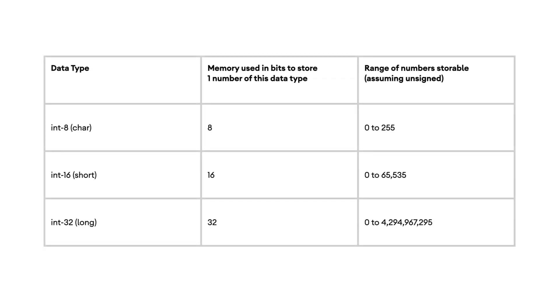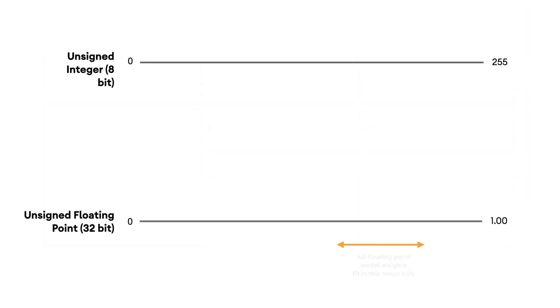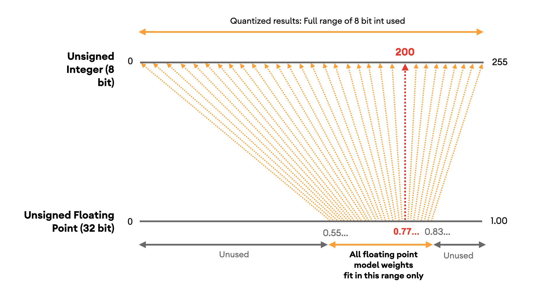If you go back to your high school days, you may remember that computers have different ways to represent numbers depending on the range of numbers you want to store, as shown in this table. Clearly, the more memory you use to represent a number, the larger the range of numbers you can store, but it comes with a memory cost. When building and training a machine learning model, it's very common that the 32-bit float type is used to store model weights. However, it turns out that even if you reduce the precision to an 8-bit integer for the weights, the model does not lose too much accuracy.